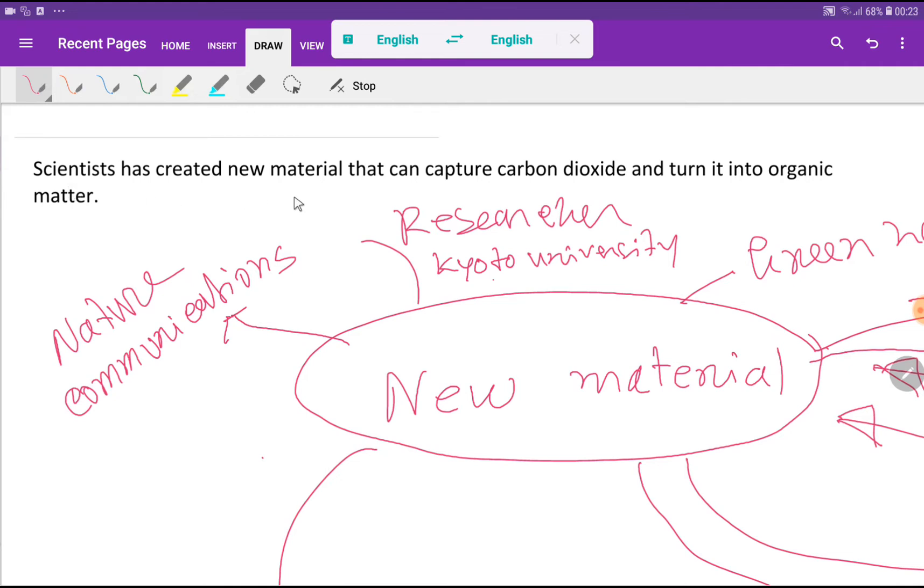Scientists has developed a new material that can capture carbon dioxide and turn it into organic matter. You know that carbon dioxide is a problem for our existence now because burning of fossil fuel is creating more carbon dioxide in the air.